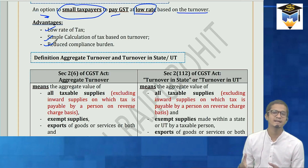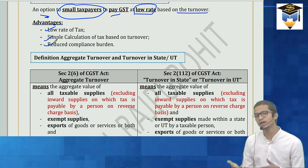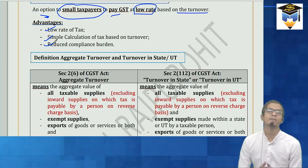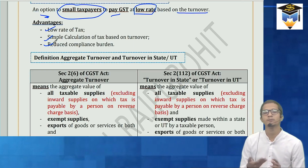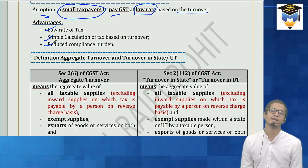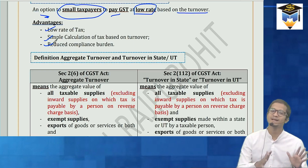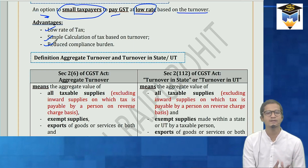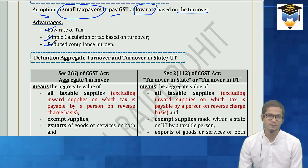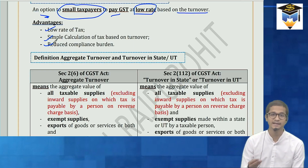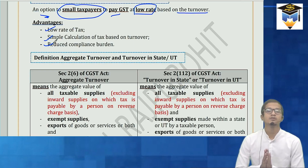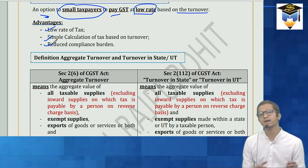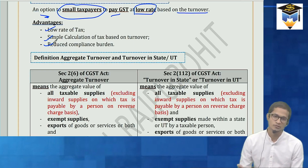The books of accounts related to input tax credit which you have to maintain in regular scheme — you don't need to maintain those in composition scheme, because you are not going to get input tax credit at all. So there are relaxations related to books and records, though that is not part of the CA Inter syllabus.